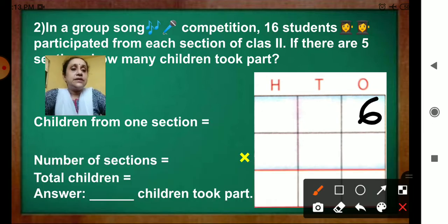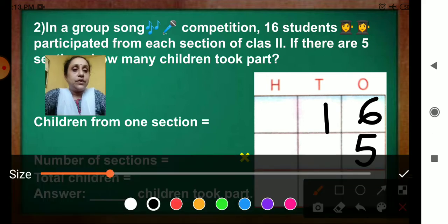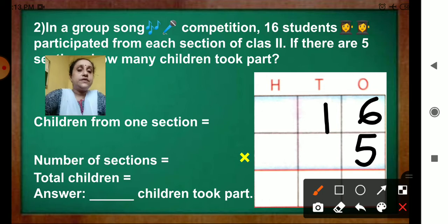6, here 1 in tens place. Now number of sections, 5. Now let's do the multiplication. Number of sections we have written. So to get the total children, what we have to do?